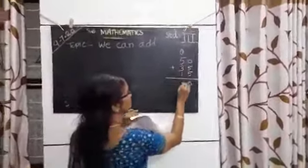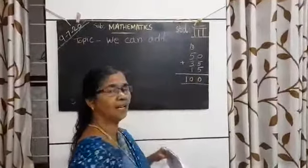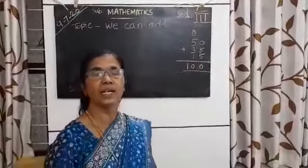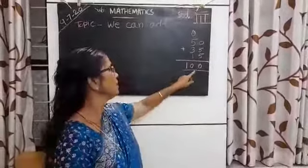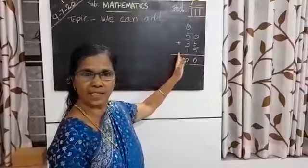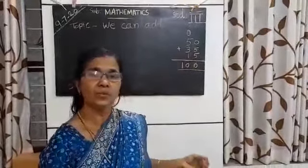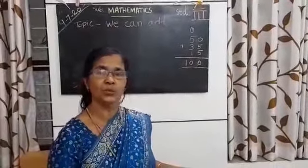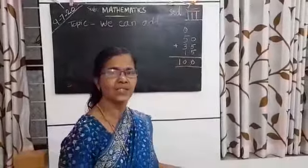9 plus 1 is equal to 10. The amount is 100. We call this the sum. When we add, we get an answer. For that answer, we use the word sum, S-U-M. Got it?